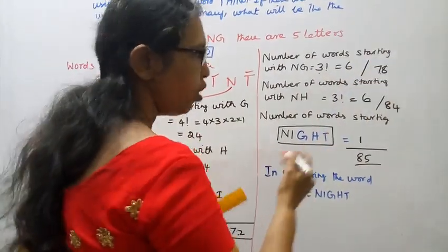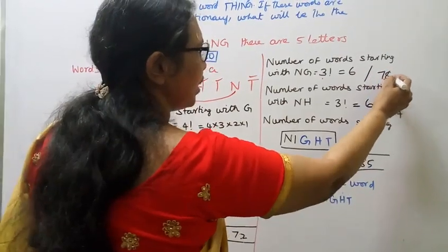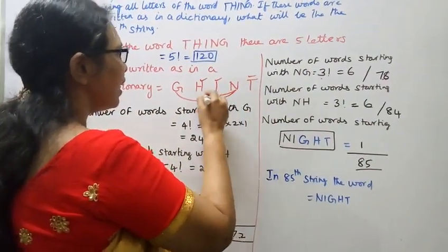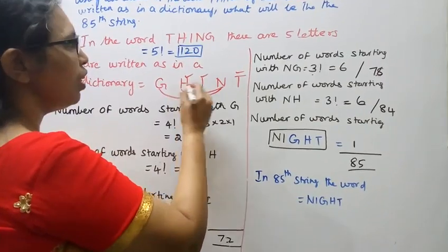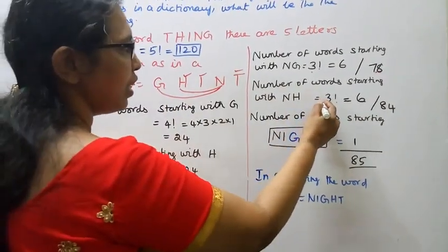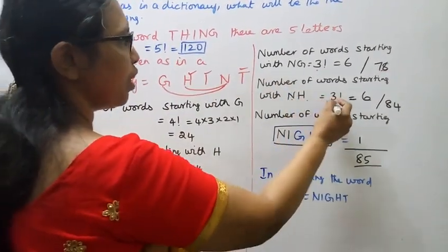78 so far. Now N, H. After NH, the remaining 3 give 3 factorial.